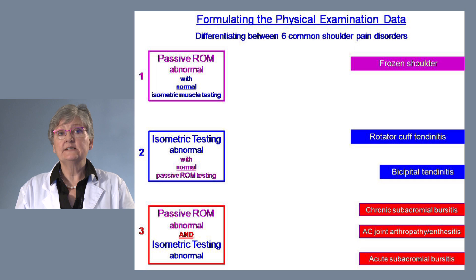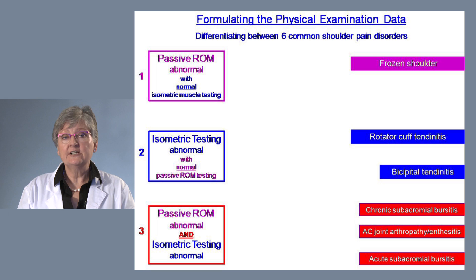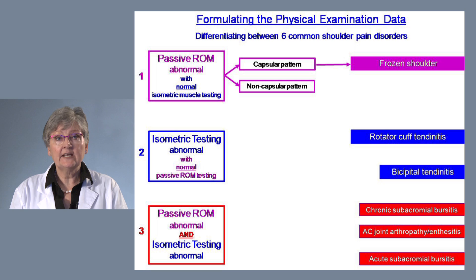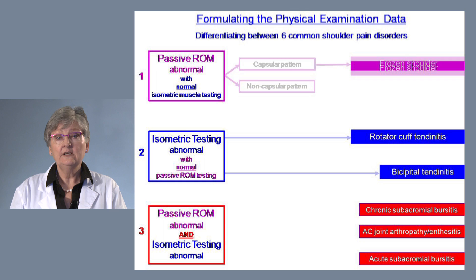When passive range of motion only is abnormal with normal isometric muscle testing, we have to divide the passive range of motion being abnormal into one of two patterns — either the capsular pattern or the non-capsular pattern. A frozen shoulder will have a capsular restriction of motion on testing.